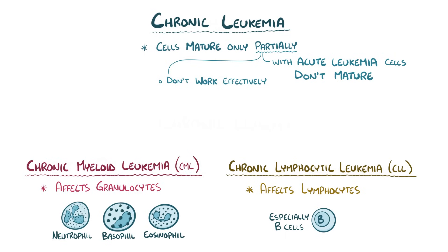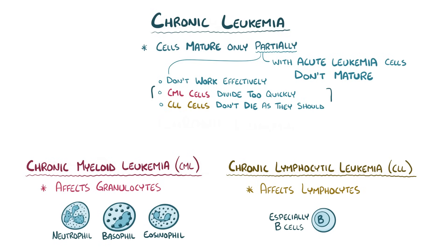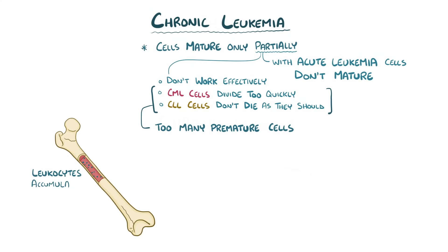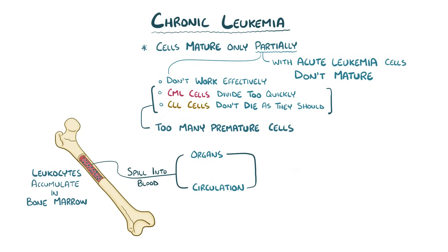The chromosomal changes alter the cell's normal cell cycle. In CML the cells start to divide way too quickly, and in CLL the cells don't die when they should, and in both situations we're left with way too many of these premature cells. So over time, premature leukocytes accumulate in the bone marrow, until eventually they spill out into the blood. Some of these settle down in organs and tissues across the body, but others keep circulating in the blood. With a bunch of extra cells in the blood, all the healthy cells get crowded out, and it's tough for them to survive with the extra competition for nutrients.